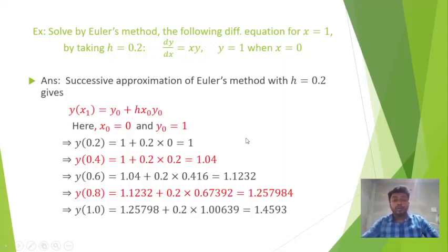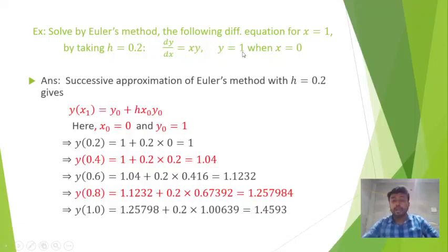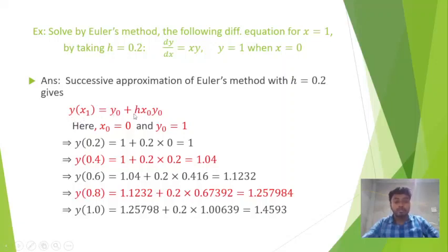Now we try to solve a numerical problem using Euler's method. Solve by Euler's method the following differential equation for x = 1 by taking h = 0.2: dy/dx = x·y, y = 1 when x = 0. That is, the initial condition is x₀ = 0 and y₀ = 1, and we have to find the value for x = 1. Applying Euler's method, successive approximations with h = 0.2 give the formula y(x₁) = y₀ + h·x₀·y₀.